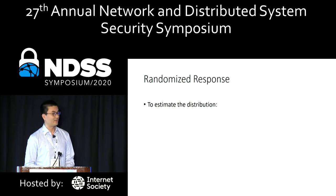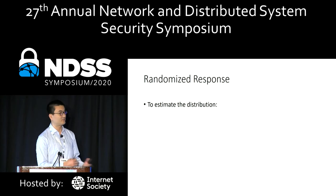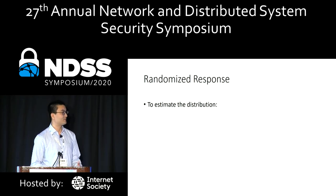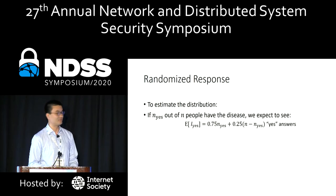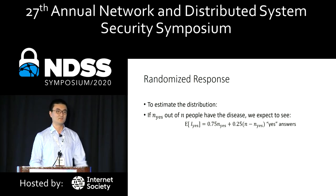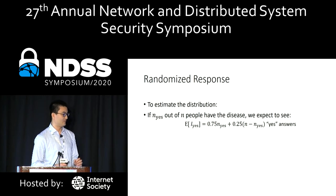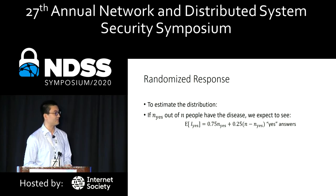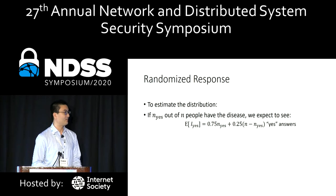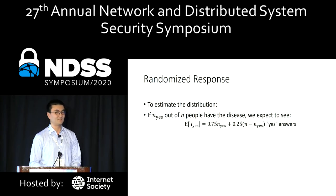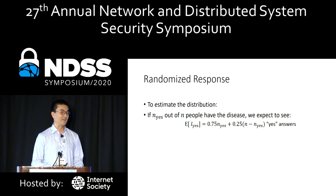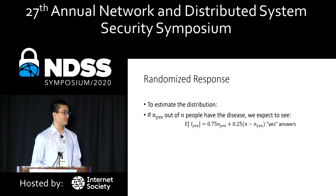On the other hand, the server or survey person, after collecting users' reports, wants to estimate the frequency or distribution of the population. So in this case, if we assume n-sub-yes number of users have the disease, we expect 75% of them and 25% of the rest of the users will answer yes.